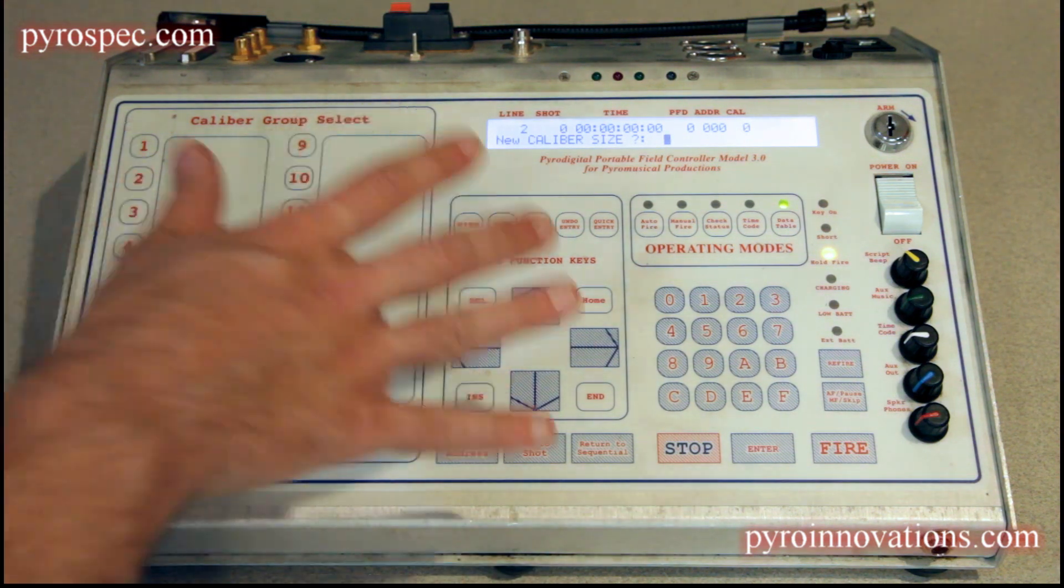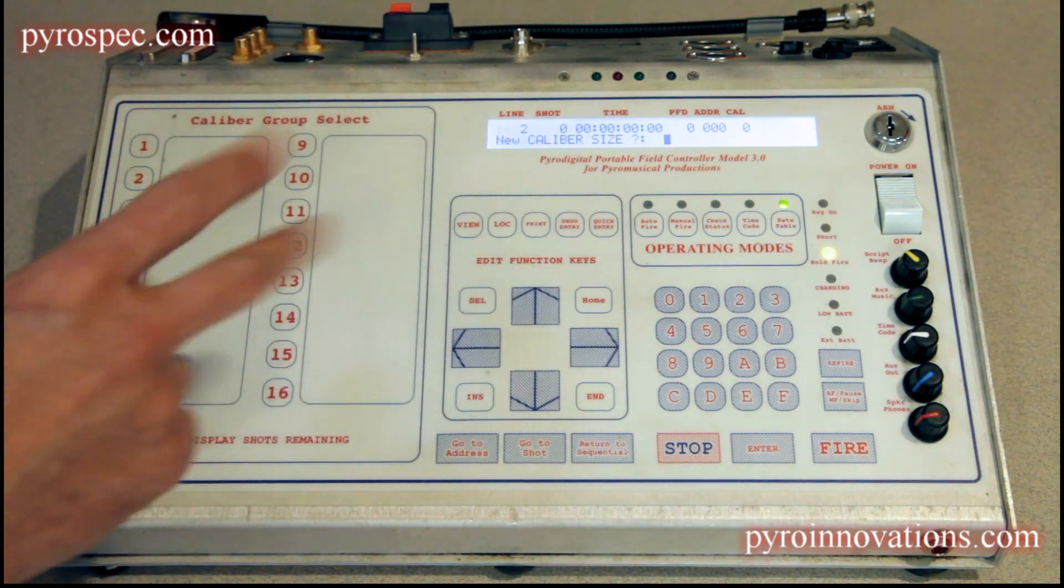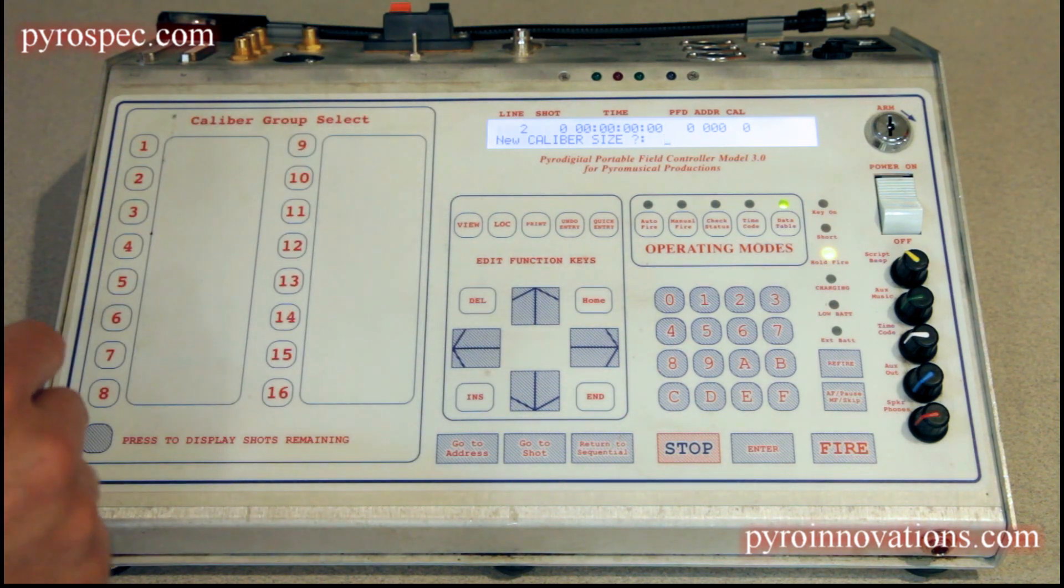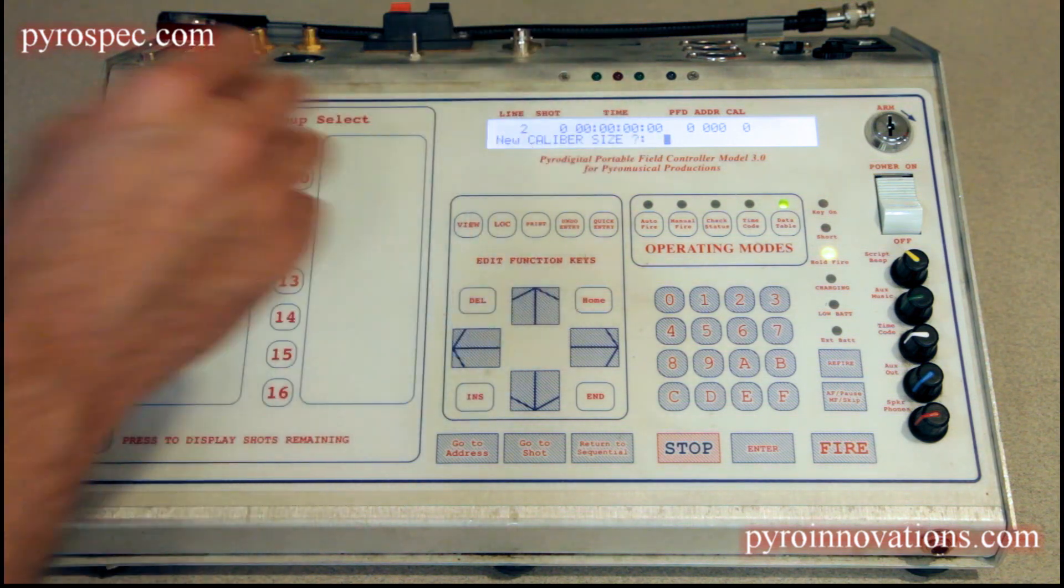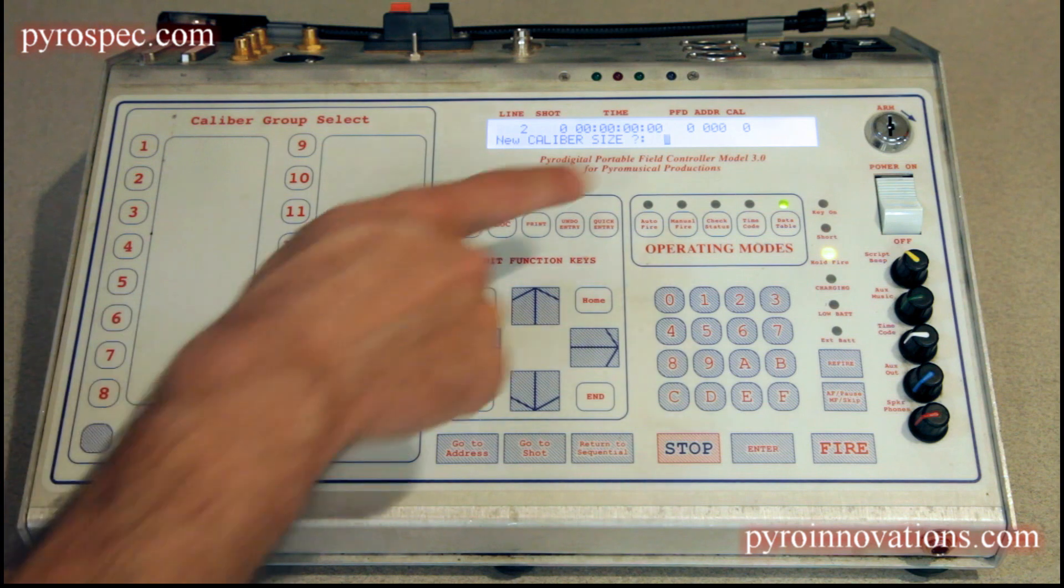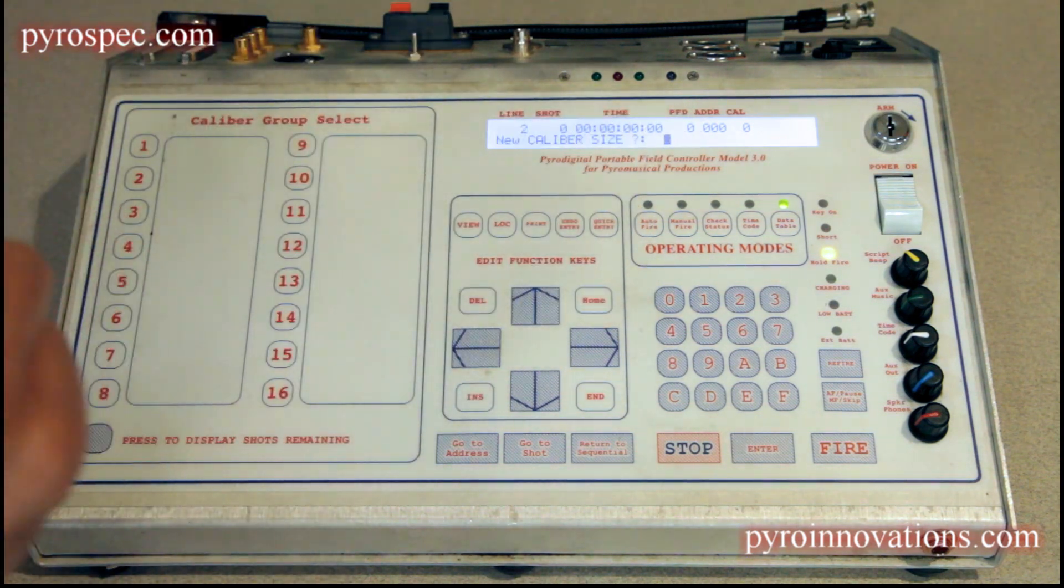In order to program a zipper fire, there's two things that need to be correct: the time must be the same for each of those zipper fire shots and the pre-fire delay must be zero.